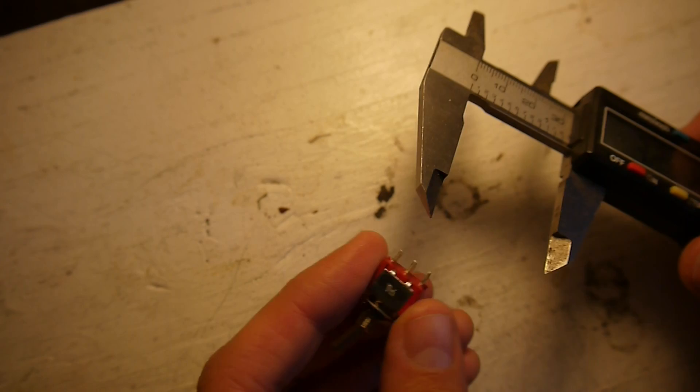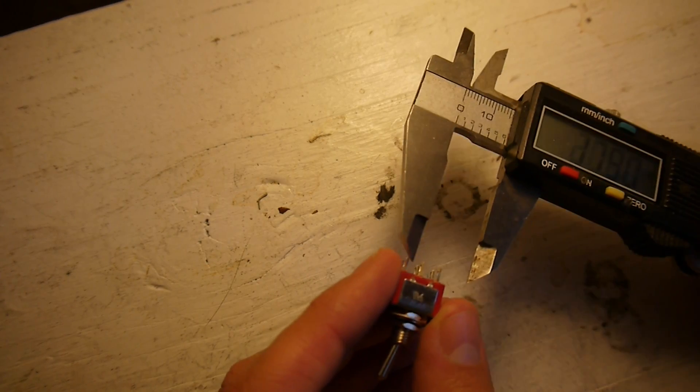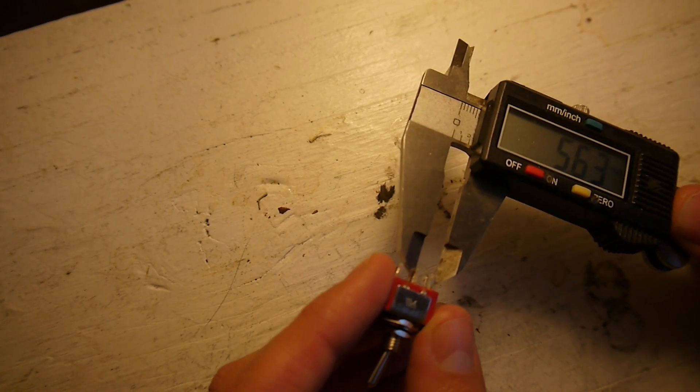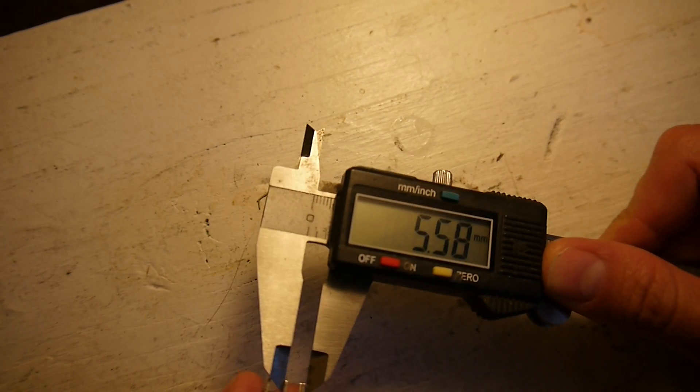Let's see, the spacing of, let's start with the lugs. From outside to outside, it's about 5.5.